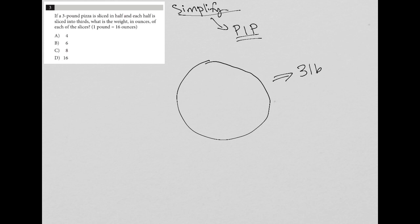And what's going to happen to this pizza is it's sliced in half and then each half is sliced into thirds. So one half... something like that. And then this half, same thing.